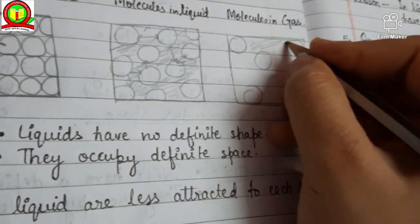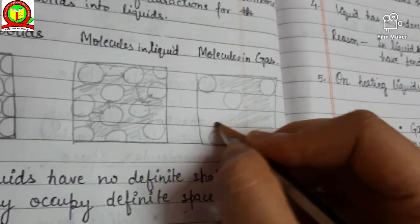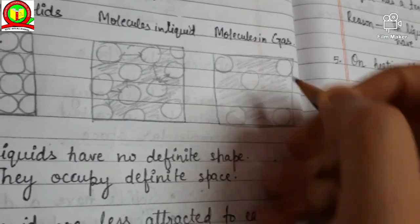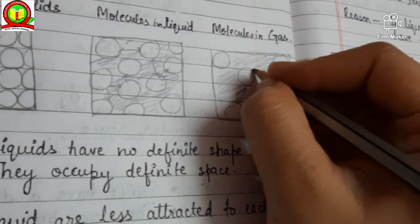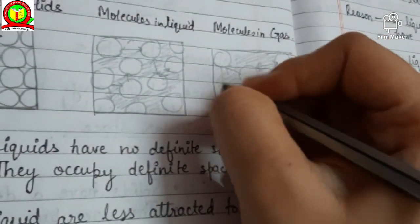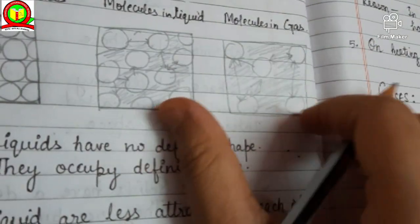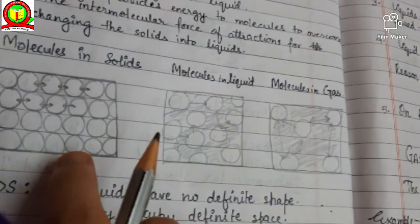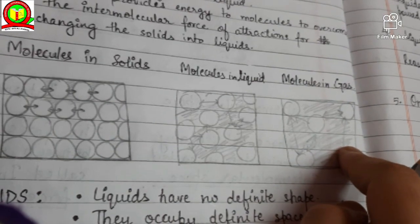Now we will see the diagrammatic representation of the molecules of gases. They are so loosely packed and the intermolecular force of attraction is very less. The space between the molecules is very large — you can see it through your eyes and differentiate between them. We will continue in our next video.